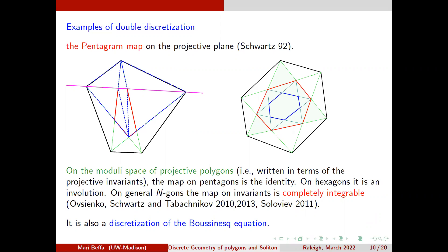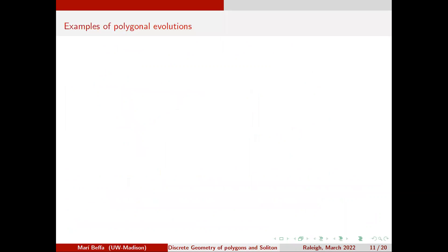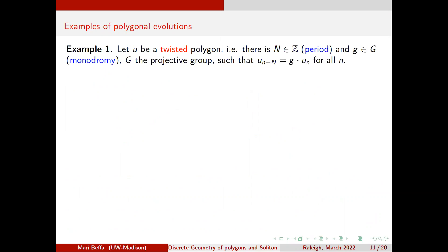What really hooked me is that if you take the continuous limit of the pentagram map — as defined on the invariants — you get the Boussinesq equation, another soliton equation, a completely integrable PDE. So there are three levels: the PDE (Boussinesq), the discretization on the invariants (the pentagram map), and the pentagram map on the polygons themselves. I'll now talk about my last example of polygonal evolution: twisted polygons in projective space.